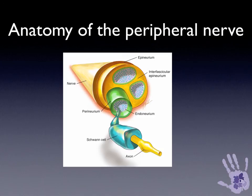When talking about the classification of a peripheral nerve injury, we need to understand the micro-anatomy of the peripheral nerve. Each axon, shown here in yellow, lies within an endoneural tube supported by Schwann cells. These individual axons are bound together into fascicle groups embedded within perineural tissue. Between the fascicle groups is interfascicular epineurium, and the whole lot is bundled together with an epineural layer. Superficially within the epineural layer are the longitudinal vascular structures that supply nutrition and oxygenation to the nerve.